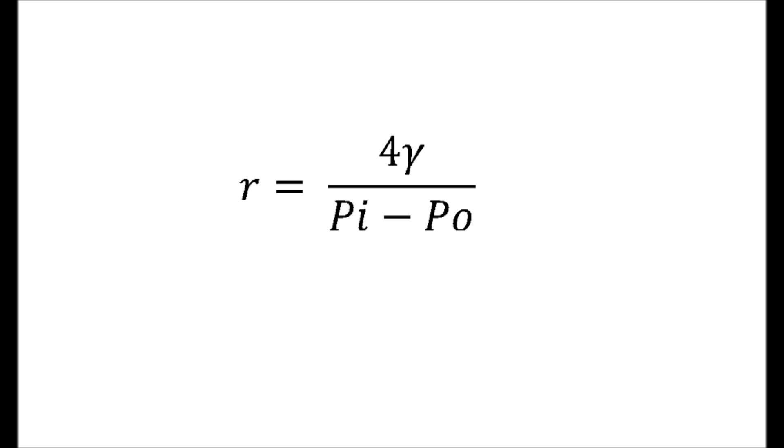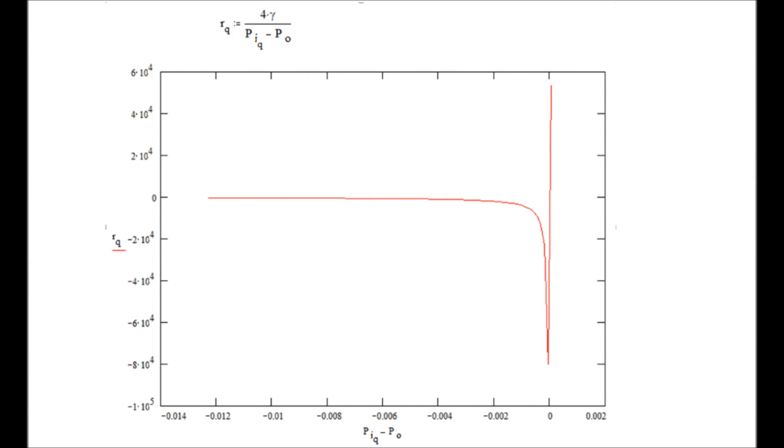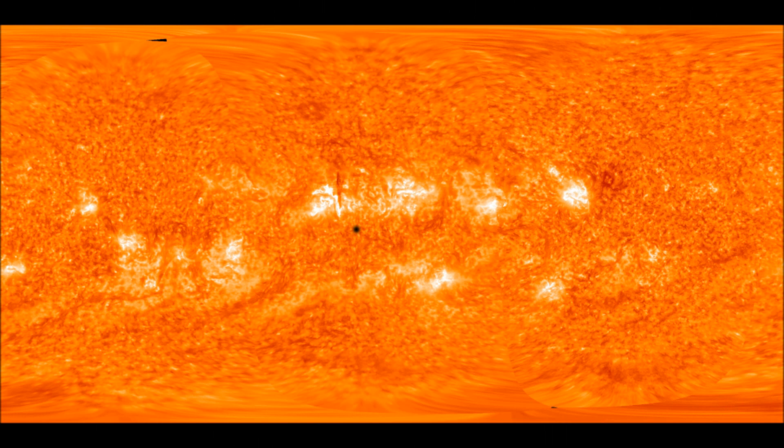Also, when the quantum fluctuation generates a vacuum bubble which cools the energy surrounding its surface enough to start making particles, we then end up with a situation where the internal pressure PI could become less than the external pressure PO, therefore generating a negative radius after crossing through an infinite radius. What could this possibly mean?